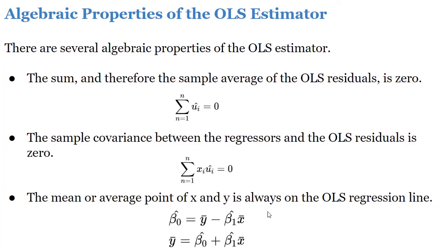The third property of the OLS estimator is that the mean point of x and y always lies on the OLS regression line. We can see that from the equation of β̂₀: β̂₀ equals ȳ minus β̂₁ multiplied by x̄. Rearranging, ȳ equals β̂₀ plus β̂₁·x̄.